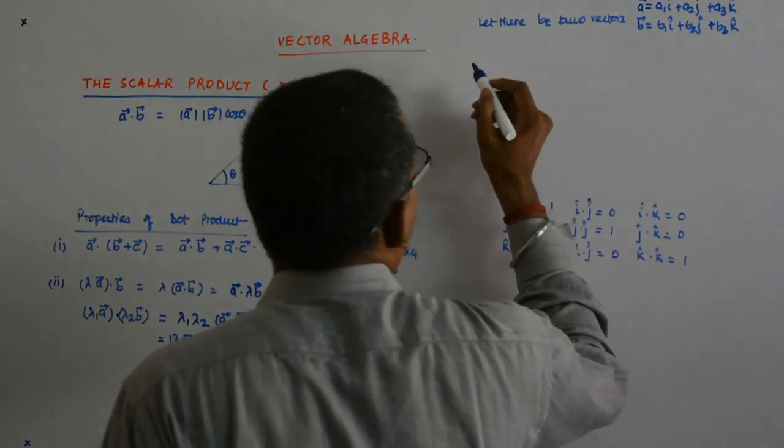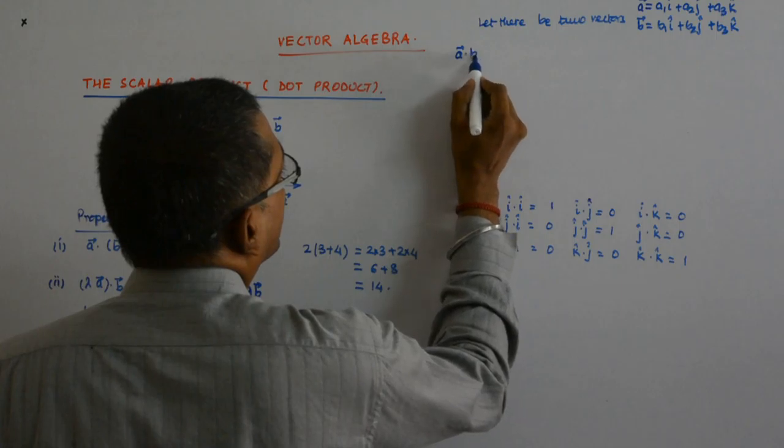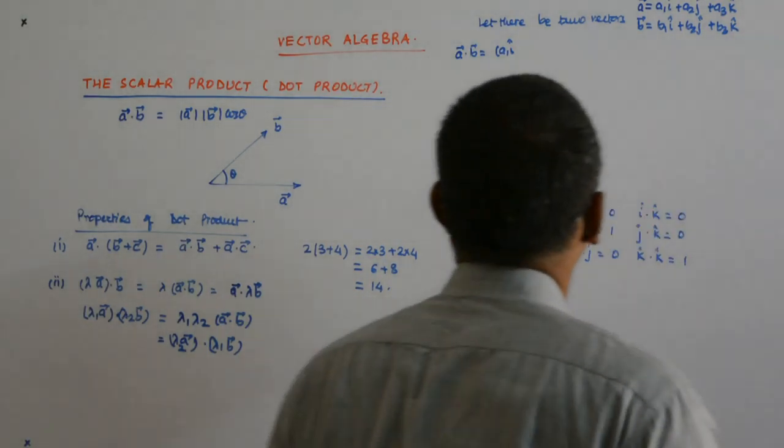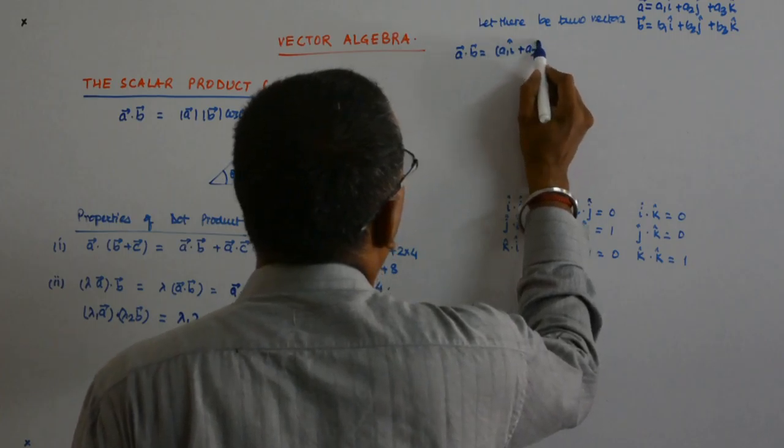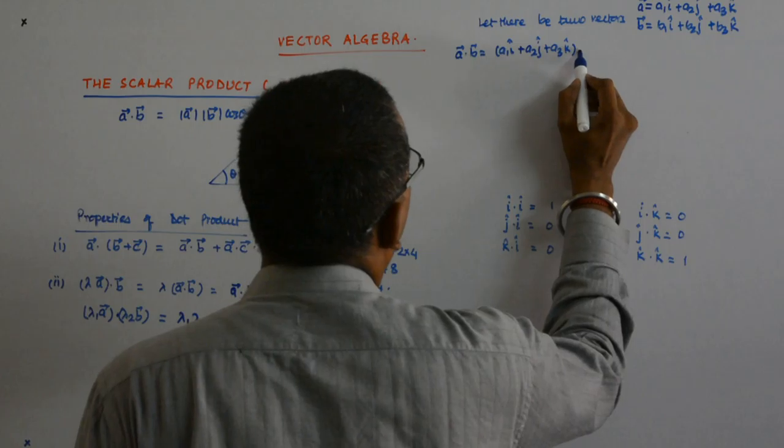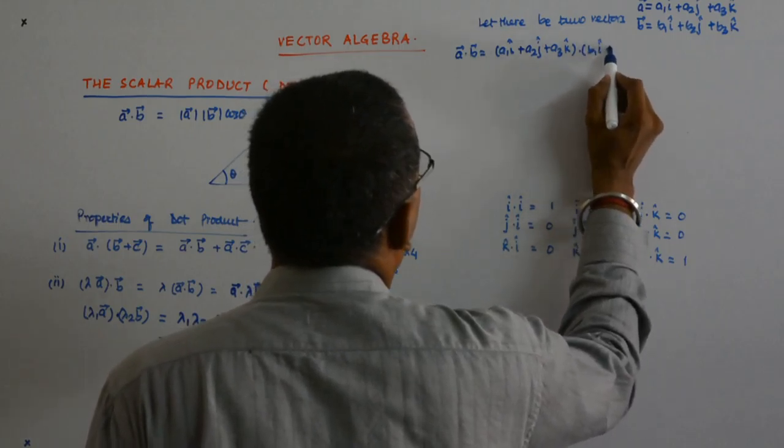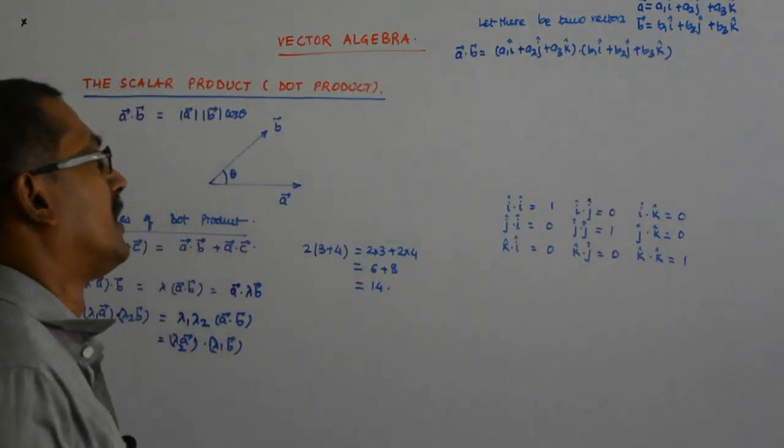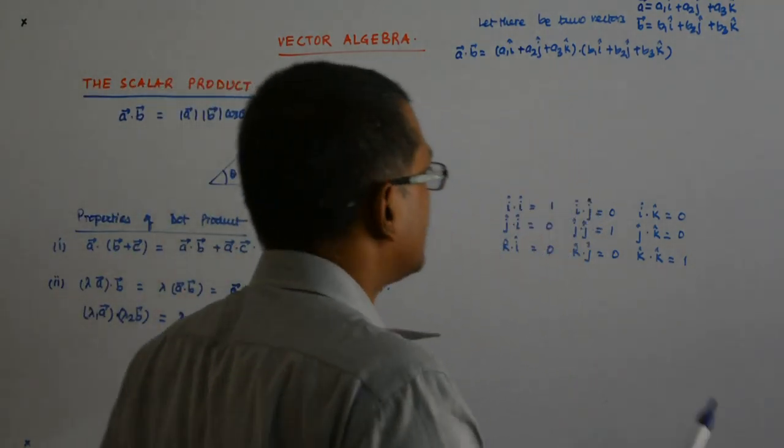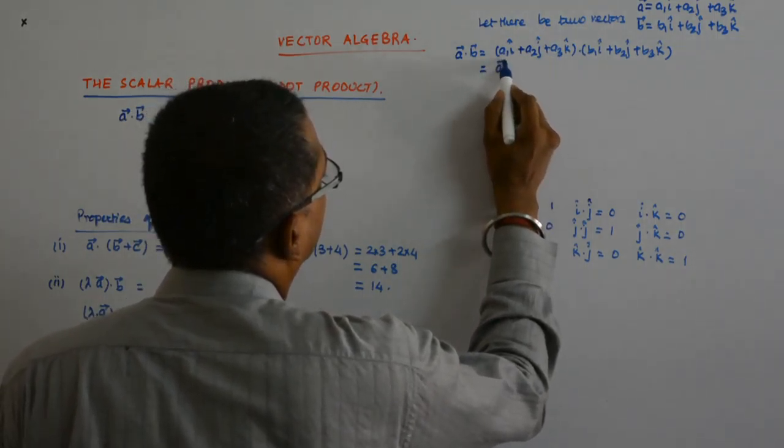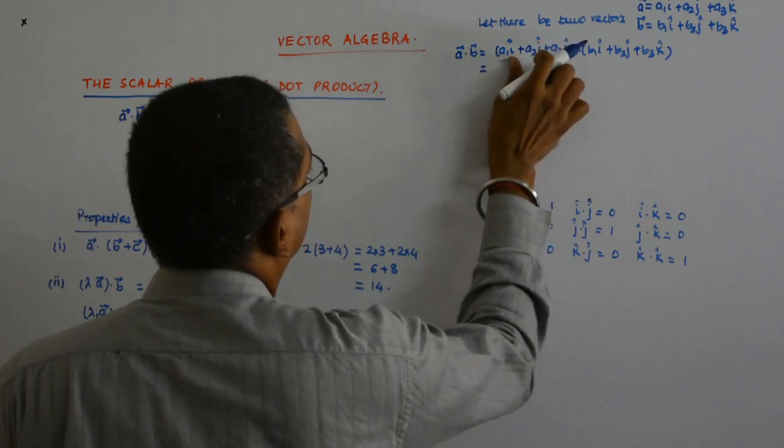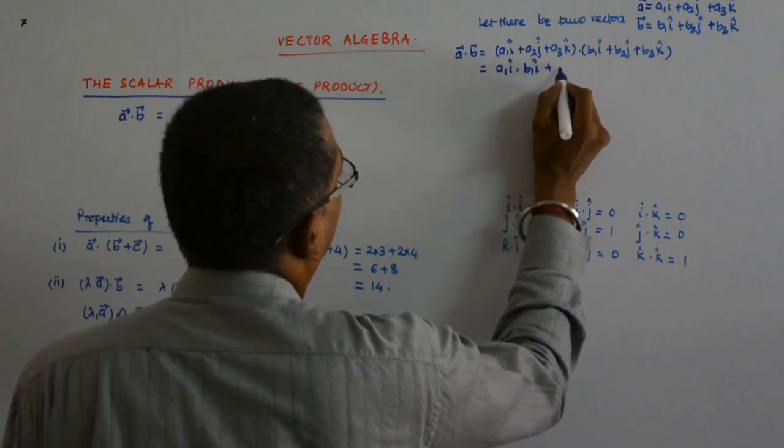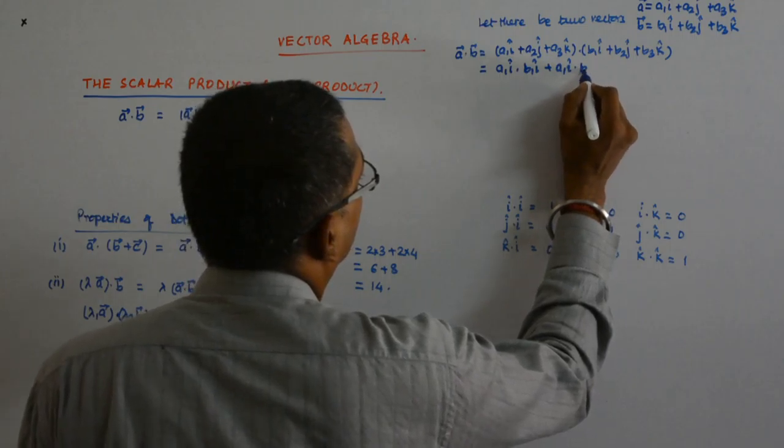What happens if I dot them? So, a dot b gives me a1 i cap plus a2 j cap plus a3 k cap dotted with b1 i cap plus b2 j cap plus b3 k cap. And I'll apply my distributive property. So, what happens?